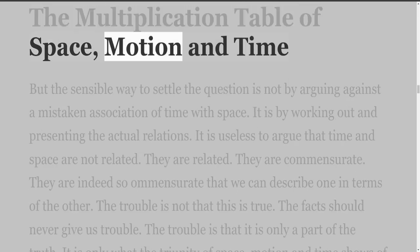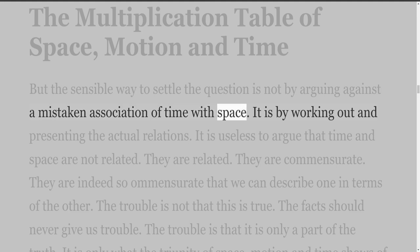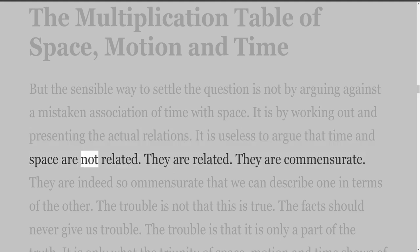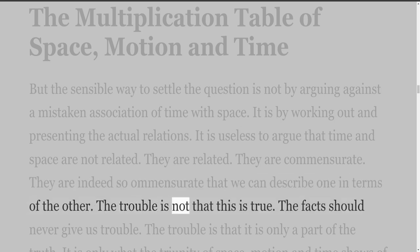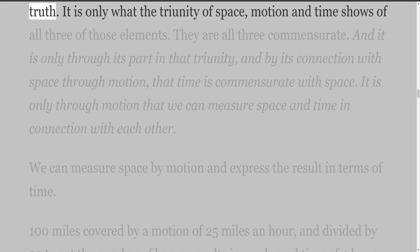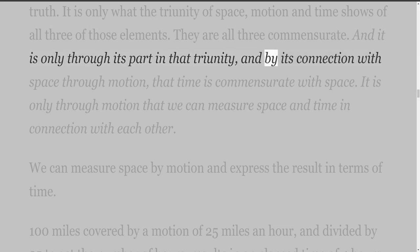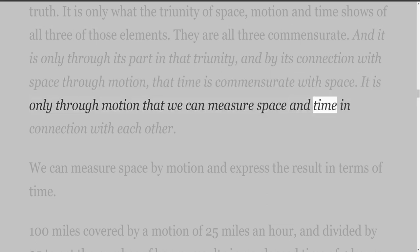The Multiplication Table of Space, Motion and Time. The sensible way to settle the question is not by arguing against a mistaken association of time with space. It is by working out and presenting the actual relations. Time and space are related — they are commensurate, so commensurate that we can describe one in terms of the other. The trouble is that it is only a part of the truth: only what the triunity of space, motion, and time shows of all three of those elements. It is only through motion that we can measure space and time in connection with each other.